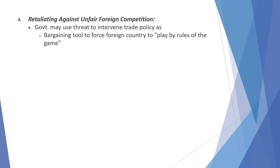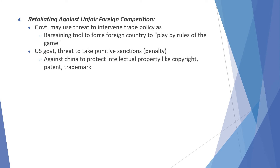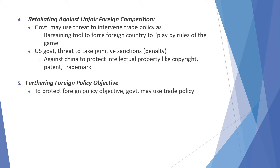Next is retaliation — retaliating against unfair foreign competition, where the government uses the threat to intervene in trade policy as a bargaining tool to force foreign countries to play by the rules. For example, the US government threatened to take punitive sanctions as a penalty against China to protect intellectual property rights like copyright, patent, and trademark.